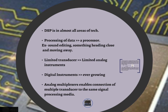Digital signal processing processes data — for this you require a processor. For example, consider sound editing: something heading close versus moving away. In order to identify whether something is coming close — like a train — you process the signal in such a way that it identifies whether the train is coming close or going away, giving an output accordingly. The sound received when a train approaches is different from when it goes away, and the processor handles this distinction.